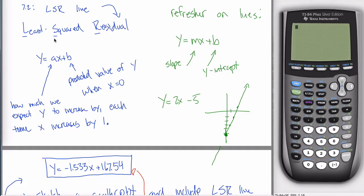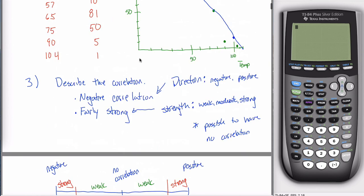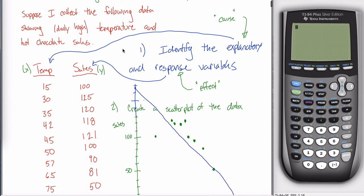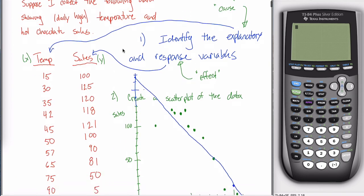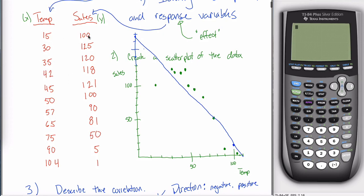All right, in the last video I spent a fair amount of time talking about how to come up with an LSR line. You're given a whole bunch of data, and in this example, we're talking about temperature and hot chocolate sales. So we have these 12 days where we recorded temperature and hot chocolate sales.